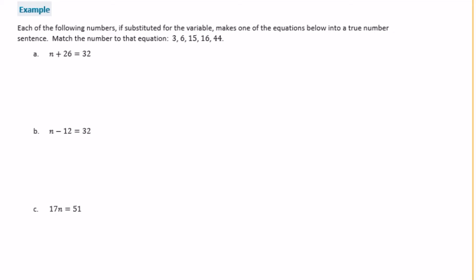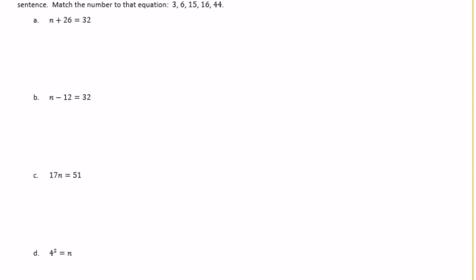An example. Each of the following numbers, if substituted for the variable, makes one of the equations below into a true number sentence. Match the number to that equation. So we have five different number sentences. And we have 3, 6, 15, 16 and 44. So each one is true for all of these.